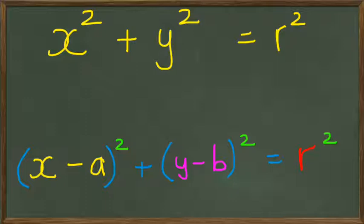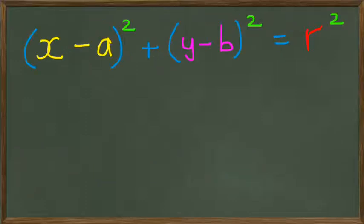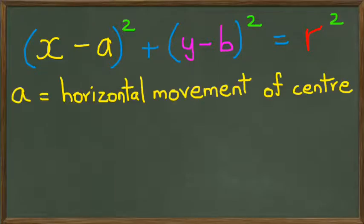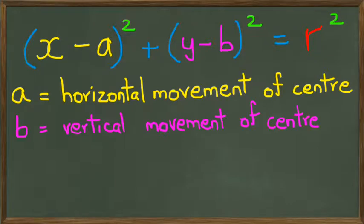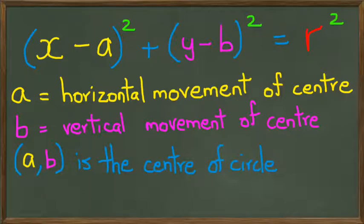I'm going to go into a little bit of detail about the bottom equation. In this equation, a will be considered as the horizontal movement of the center of the circle, and B will give you the value for the vertical movement of the center. So in other words, you could really say (a, b) is the center of the circle.